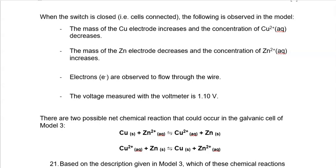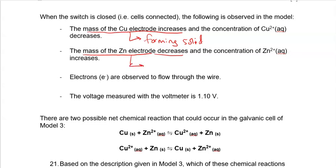Since the mass of the copper electrode is increasing, we are forming solid copper — some copper ions from solution are becoming copper solid and plating onto that electrode. And since the mass of the zinc electrode is decreasing, some of that zinc electrode is turning from zinc solid into zinc ions and going into solution.